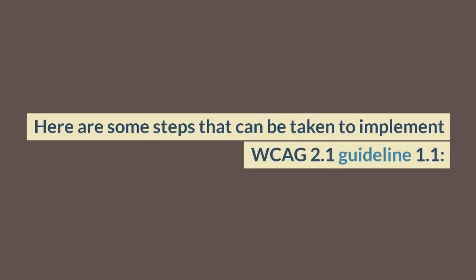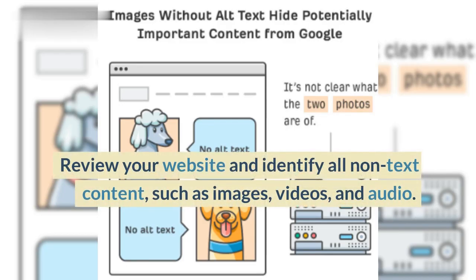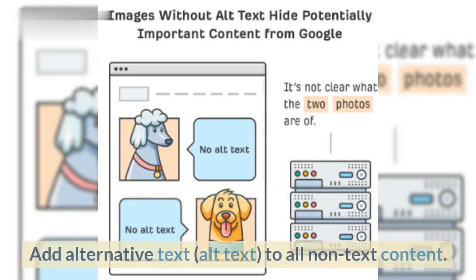Here are some steps that can be taken to implement WCAG 2.1 Guideline 1.1. Review your website and identify all non-text content, such as images, videos, and audio.